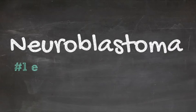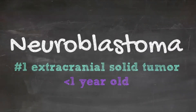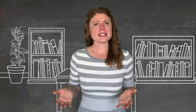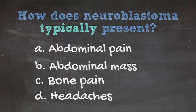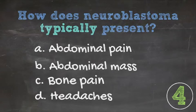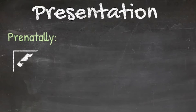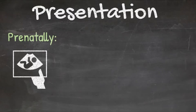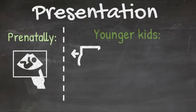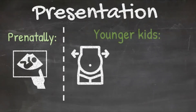Neuroblastoma is the most common extracranial solid tumor in children, with the majority occurring in children less than a year old. In the younger patients, they're oftentimes picked up either prenatally on ultrasound, or in younger kids, say two-year-old or three-year-old, it might be picked up as a solid abdominal mass.